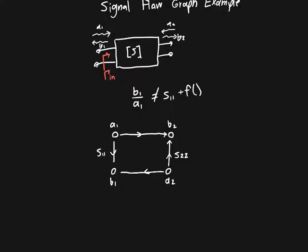And then A1 to B1 for just B2 equals S21 A1 plus S22 A2. So B2 from A1 is S21, and this is S12.